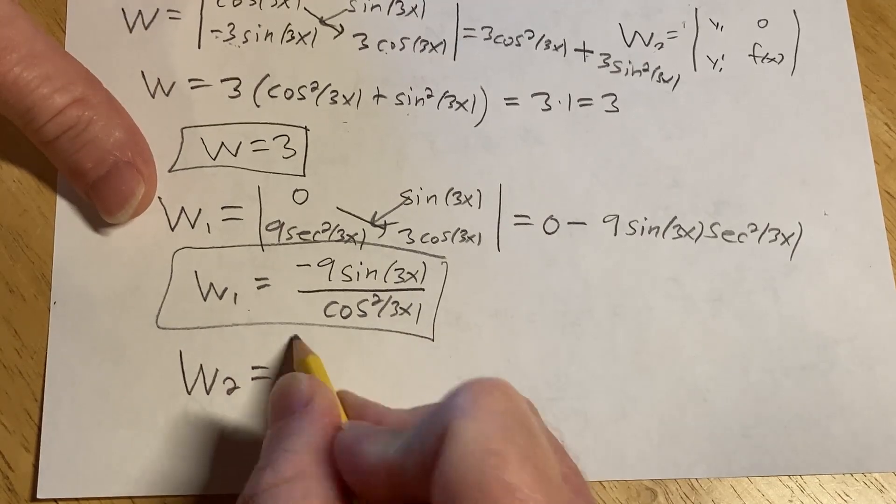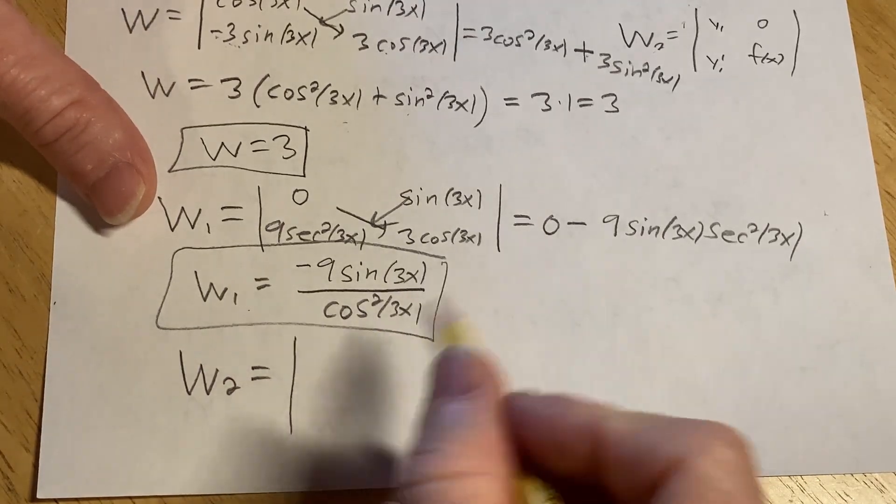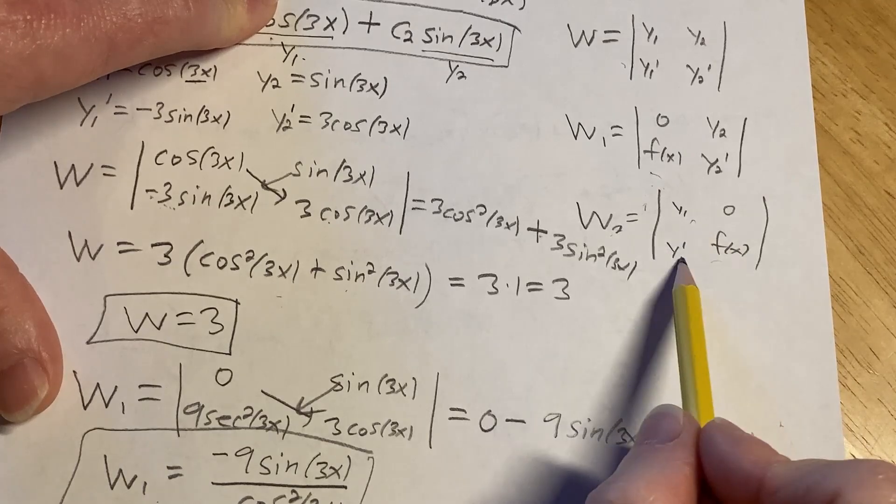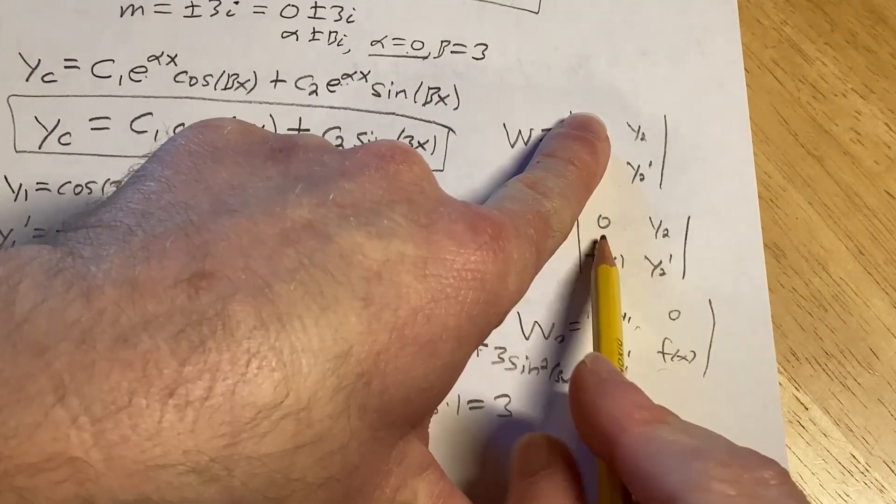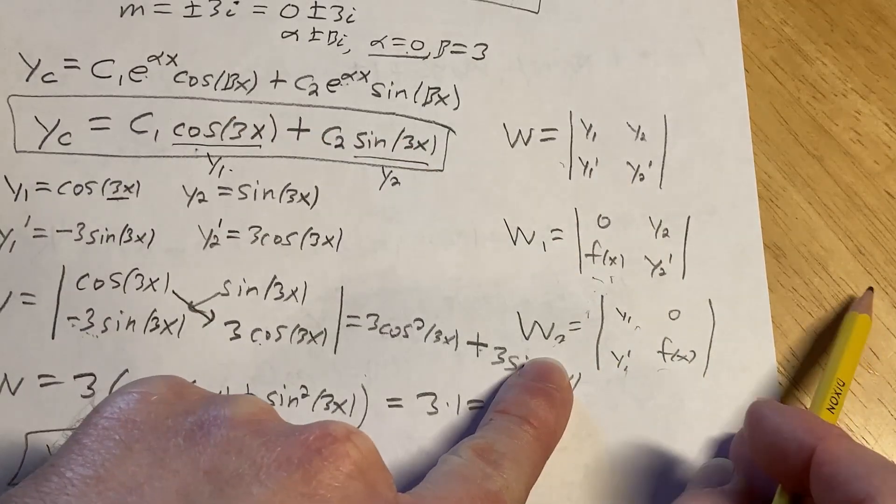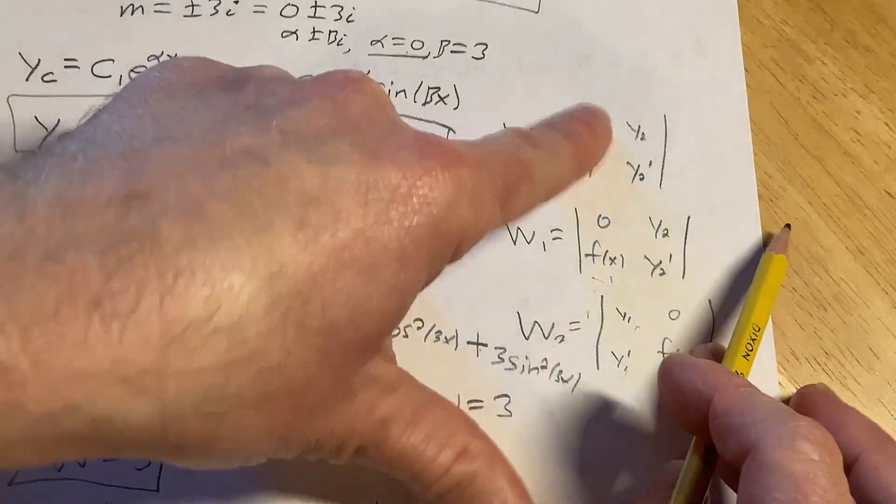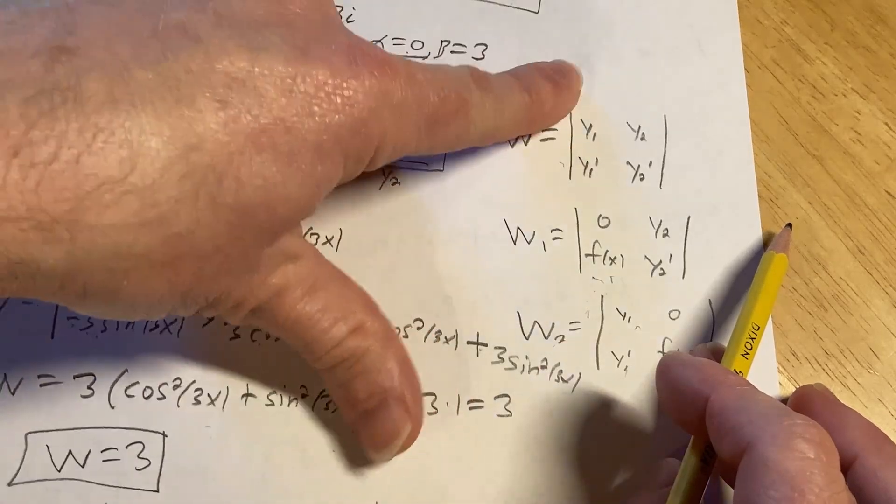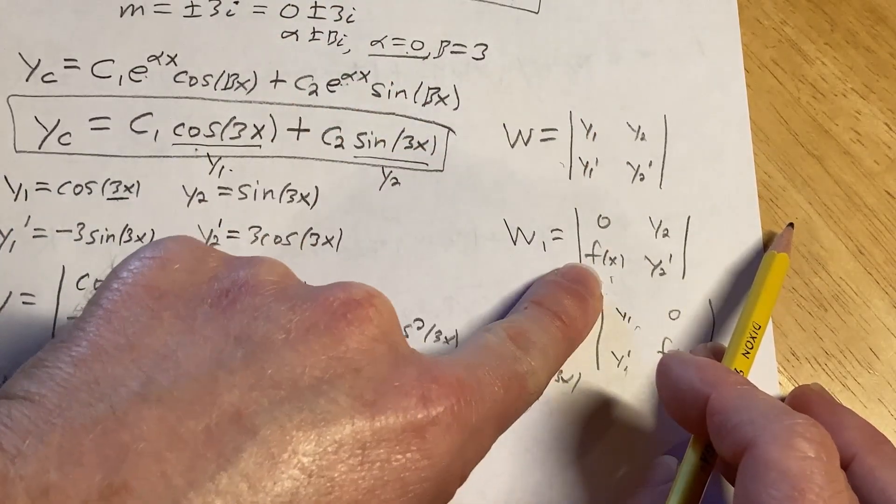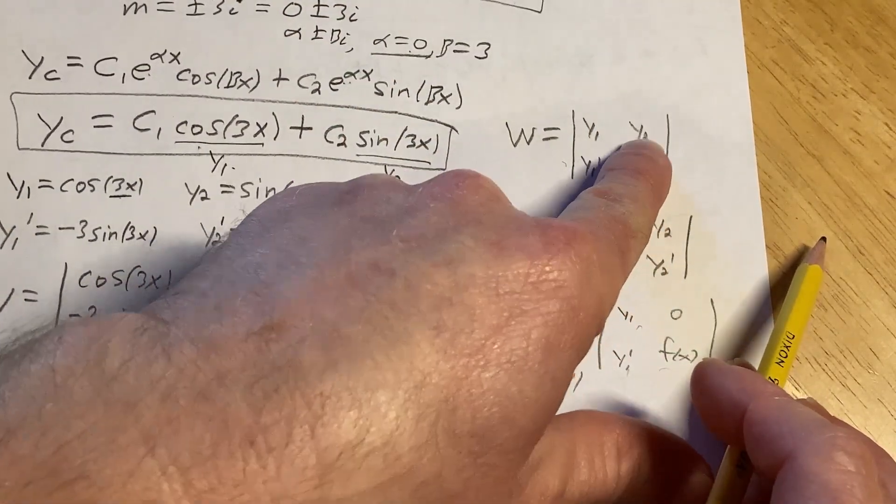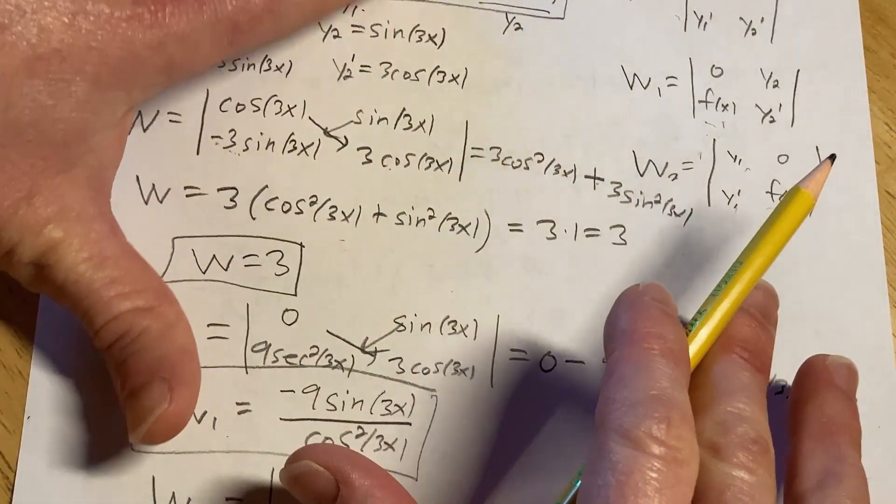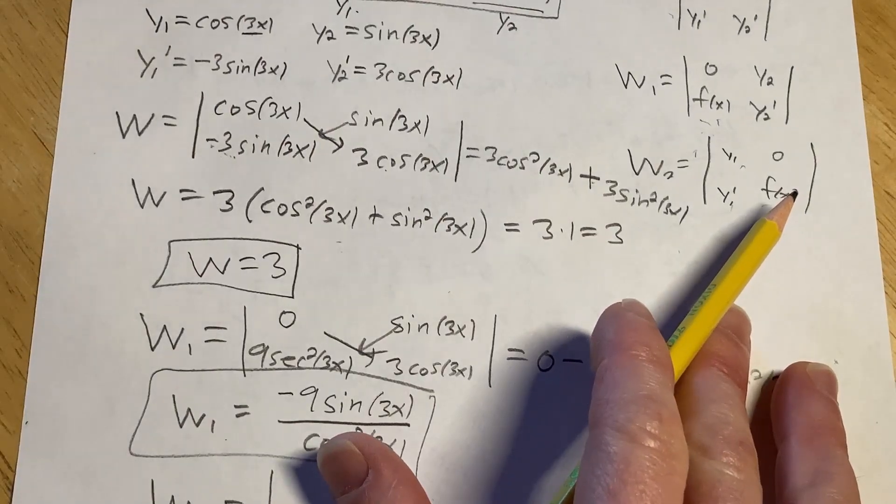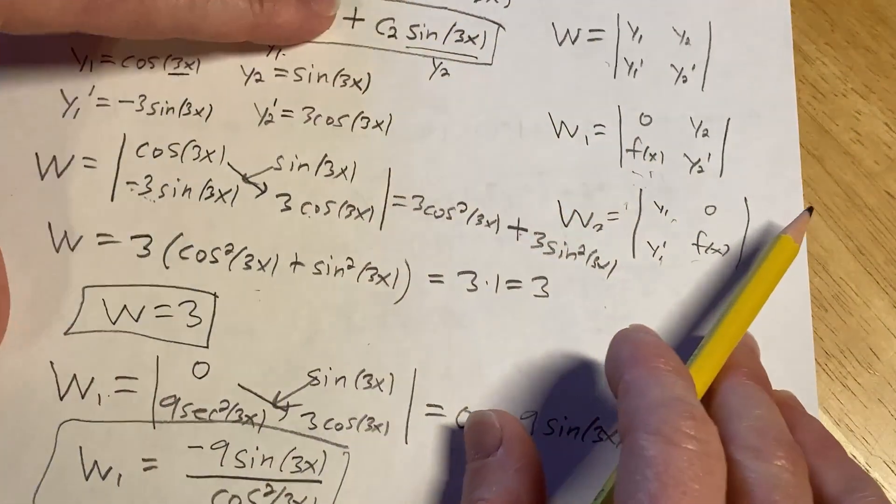W sub 2, same thing, except this time we keep y sub 1 and y sub 1 prime. Probably, it should remind you of Kramer's rule. For w1, you replace the first column with 0 f of x. For w2, you replace the second column with 0 f of x. So really easy to memorize the formulas. There's other ways of doing this. By the way, there's other formulas people use. Other books use different formulas. I like this way much better.